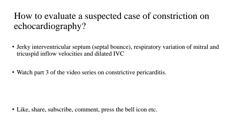After learning about all the hemodynamic findings in constriction, how do you evaluate a suspected case on echocardiography? The main cardinal echocardiographic features are: a jerky interventricular septum (septal bounce), respiratory variation of mitral and tricuspid inflow velocities, and a dilated inferior vena cava. You'll have to watch part 3 of the video series on constrictive pericarditis. As always, like, share, subscribe, comment, and press the bell icon — see you next time.